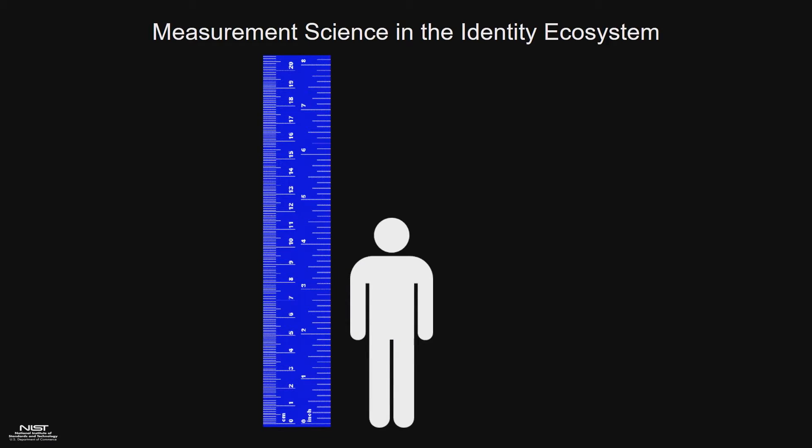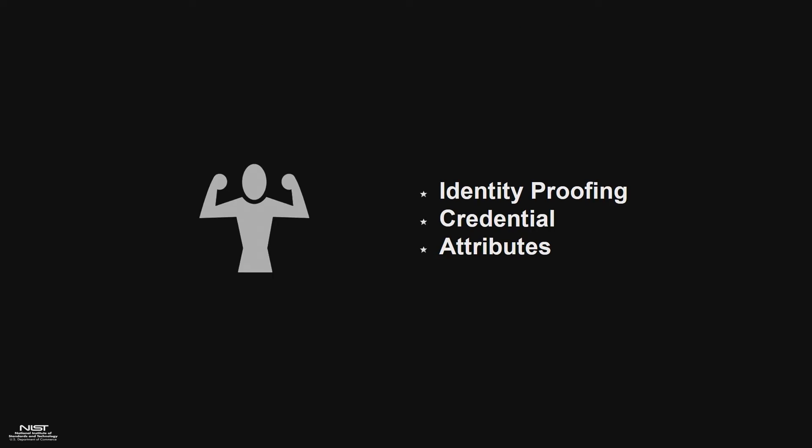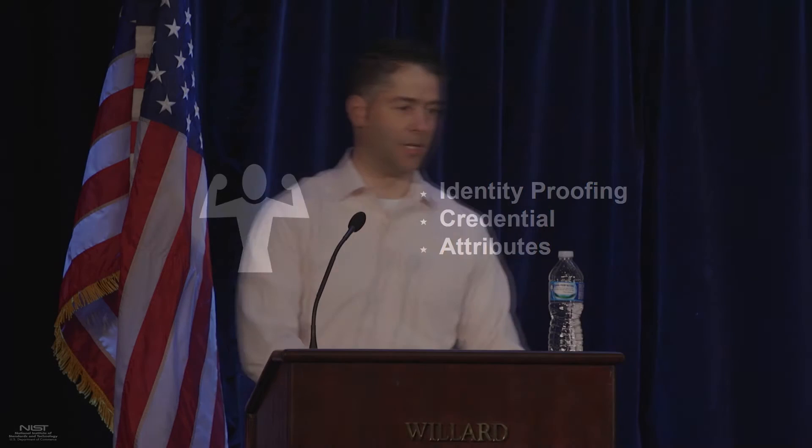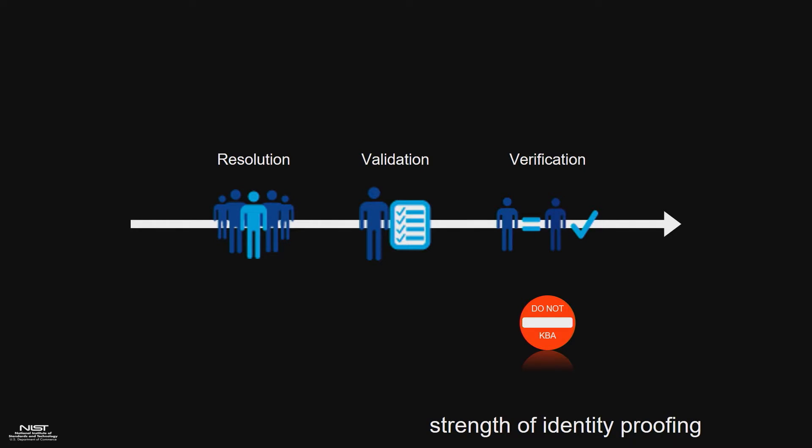Some of the other things we're doing — this is the measurement science piece. We are looking at strength of identity proofing, credentials, and attributes. These will ultimately feed into SP 800-63, but not in this draft. On the identity proofing side, the typical process: first you have to resolve to a unique record. Proofing is not done at that point — you just know or believe you're working with a specific individual.